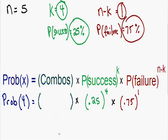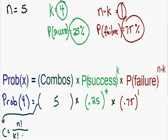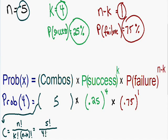So the total number of combinations is five. For more difficult problems, it's much easier to find the total number of combinations using the formula: N factorial divided by K factorial multiplied by N minus K factorial. This is the formula for the total number of combinations. Plugging in our values, we have five factorial divided by four factorial multiplied by one factorial.